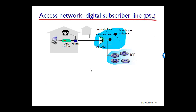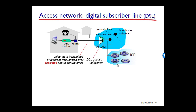Two of the most prevalent types of broadband residential access are referred to as digital subscriber lines, DSL, and cable. A resident typically obtains DSL internet access from the same local telephone company that provides wired or local phone access, so when DSL is used, the customer's telephone company is also its ISP. Each customer's DSL modem uses the existing telephone line — a twisted pair copper wire — to exchange data with the digital subscriber line access multiplexer, or DSLAM, which is located in the telephone company's local central office.